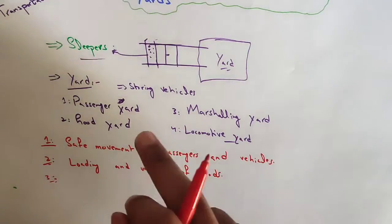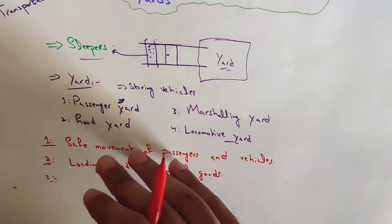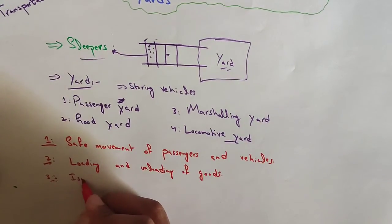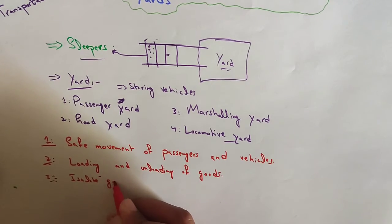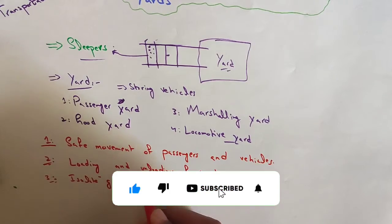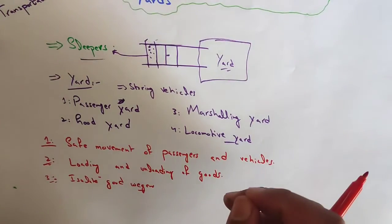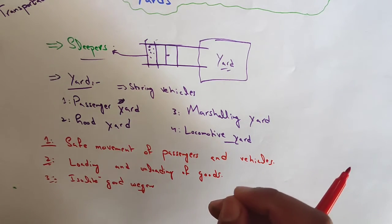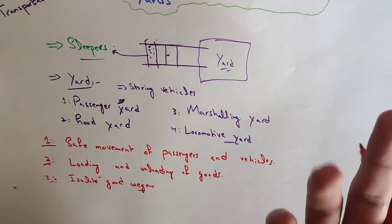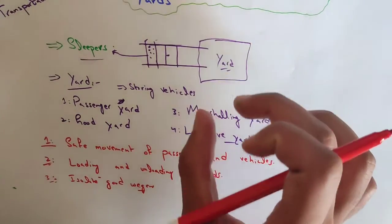The third one is marshaling yard. The main purpose of marshaling yard is to isolate goods wagons received from various centers in the order of stations to which they are to be sent. They work as distribution and distributing centers.